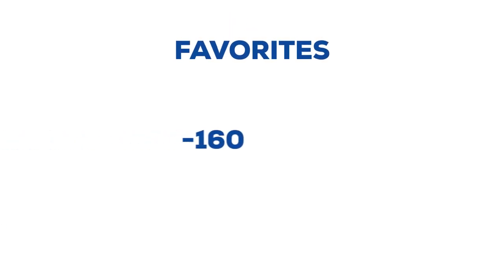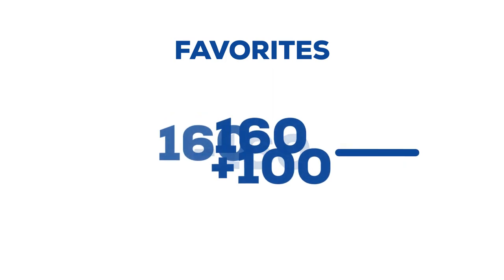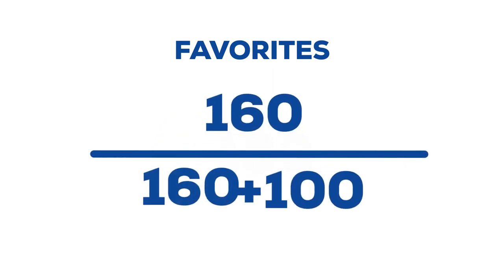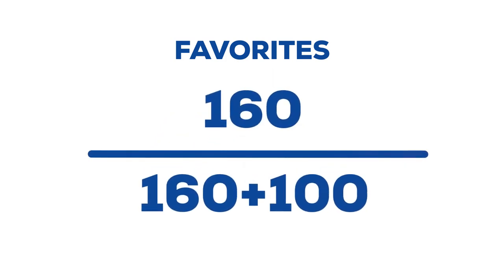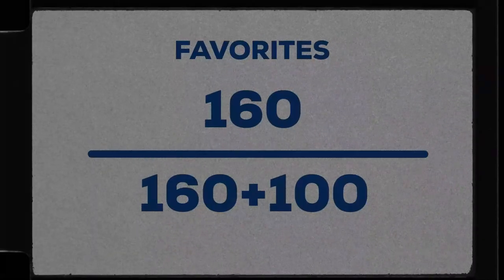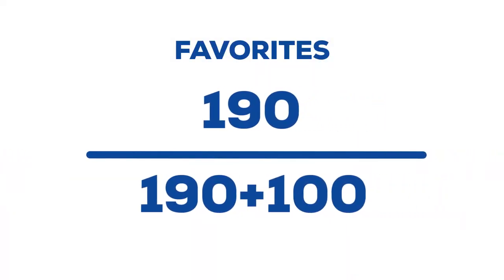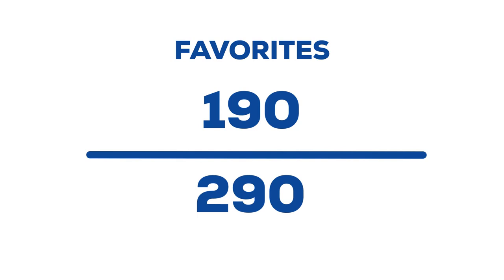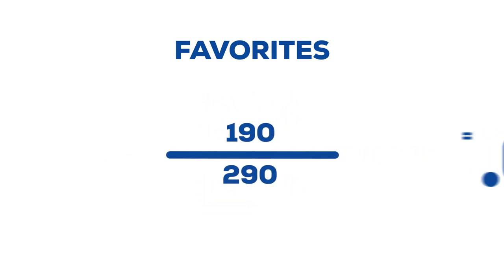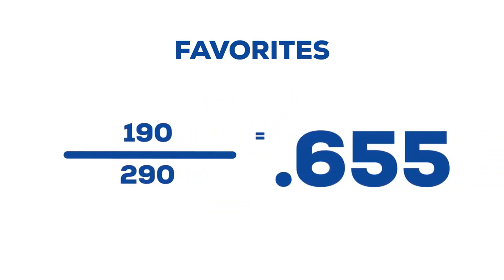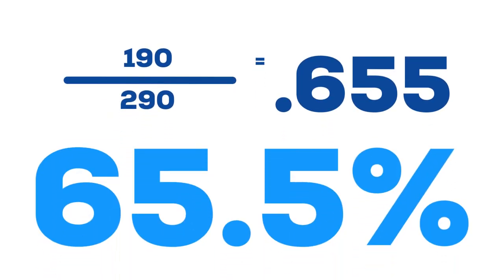As for favorites, or the team with the minus in front of their number, the formula is nearly the same. You take the odds number without the minus sign, divided by that same number plus 100. Accounting for the more than 4% industry standard vig, the favorites should be around minus 190. So the formula would read 190 divided by 290, which equals .655, meaning the sportsbook thinks there's a 65.5% chance the favorite wins.